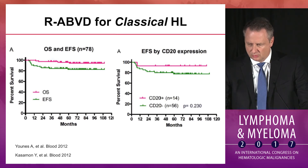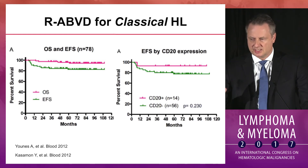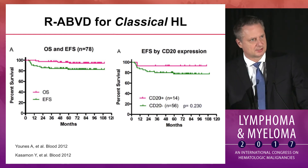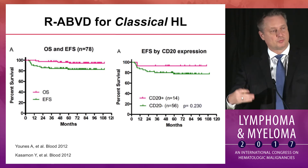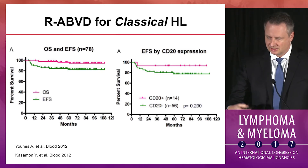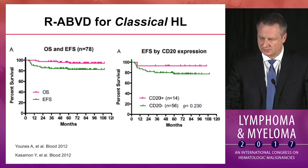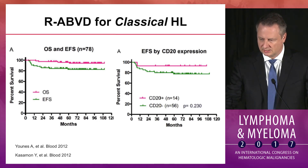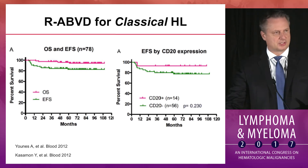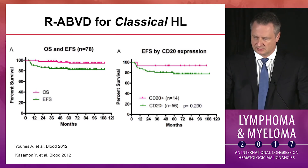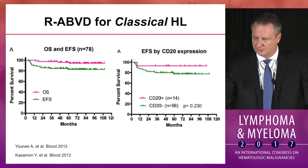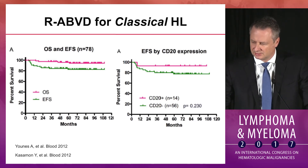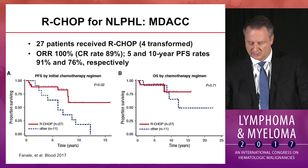Rituximab in combination with chemotherapy — specifically ABVD — has been looked at in classical Hodgkin's, though I don't recommend rituximab for classical Hodgkin's. This was explored in two phase 2 studies and shown to be feasible. In the UNIBS publication, patients receiving R-ABVD seemed to trend more favorably, though the difference was not statistically significant. It's feasible, but not established.